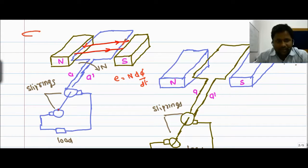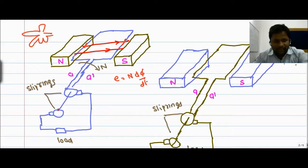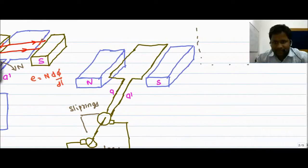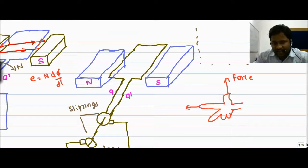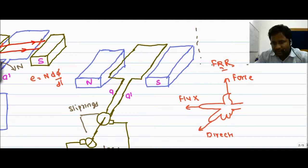This is the Fleming's right-hand rule considered like this fashion. The forefinger represents the direction of the magnetic field, the middle finger represents the direction of current, and the thumb represents the force applied on the conductor. The flux is going to be like this fashion, and this is the direction of current.